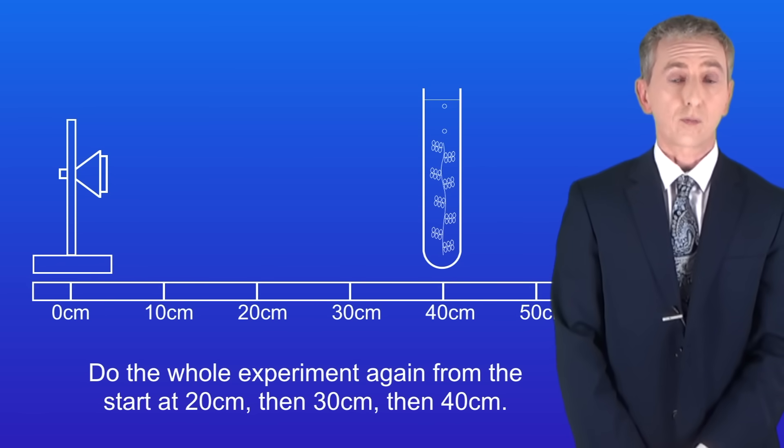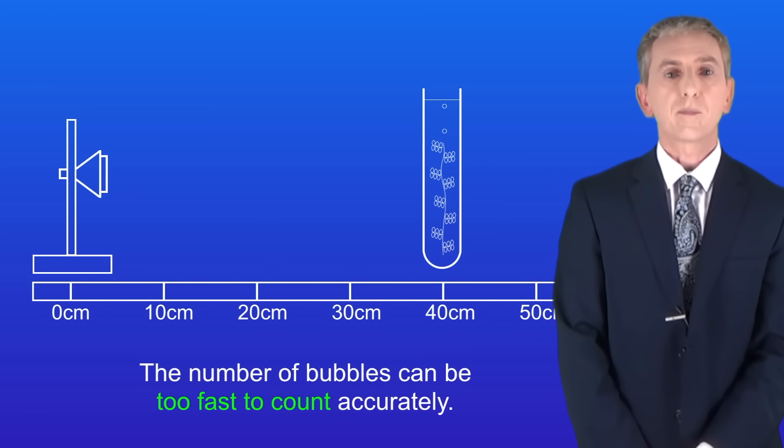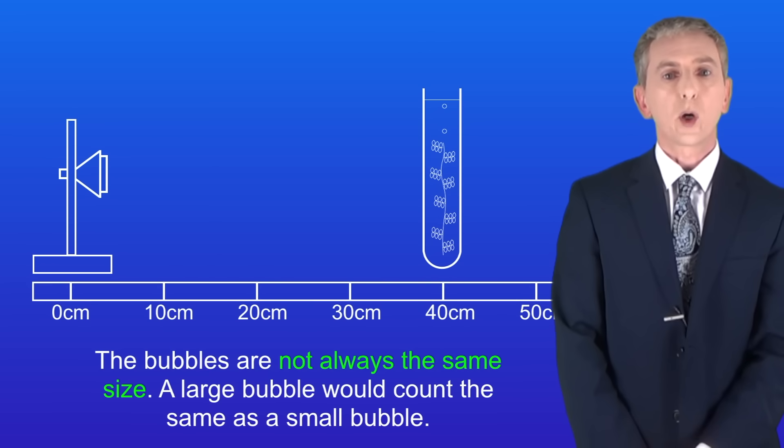There are two main problems with this practical. Firstly the number of bubbles can be too fast to count accurately. Secondly the bubbles are not always the same size, so a large bubble would count the same as a small bubble.